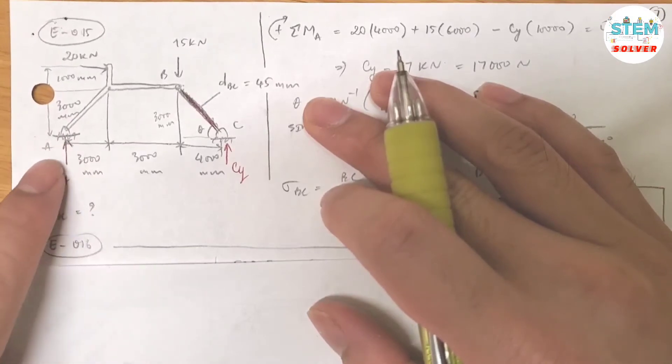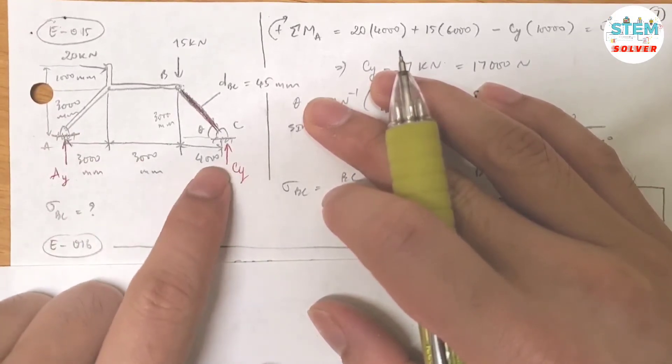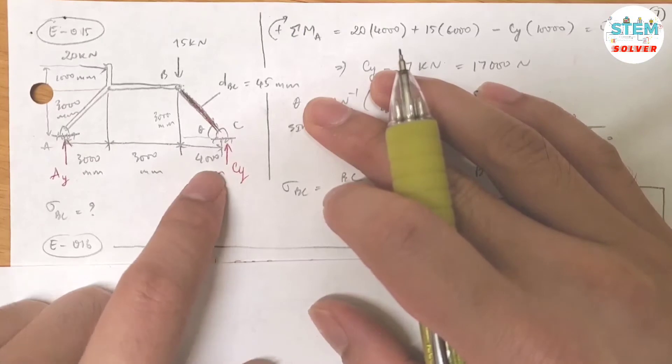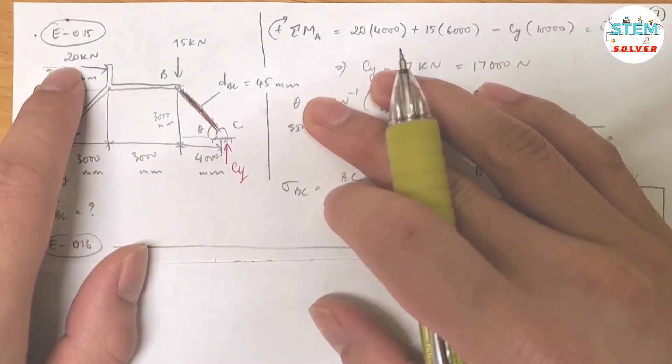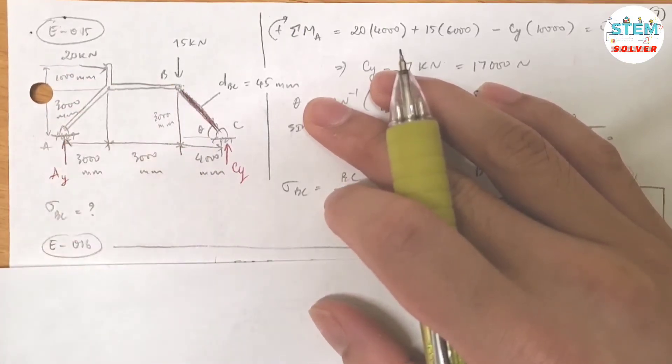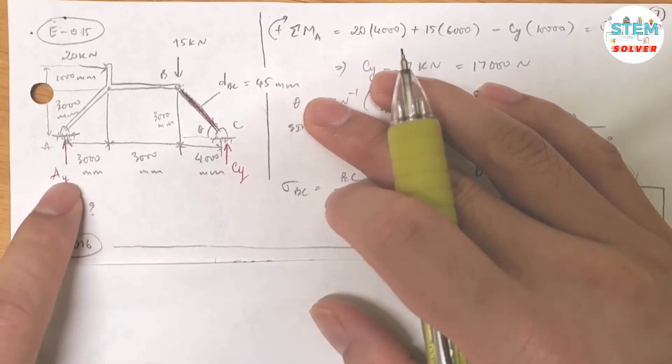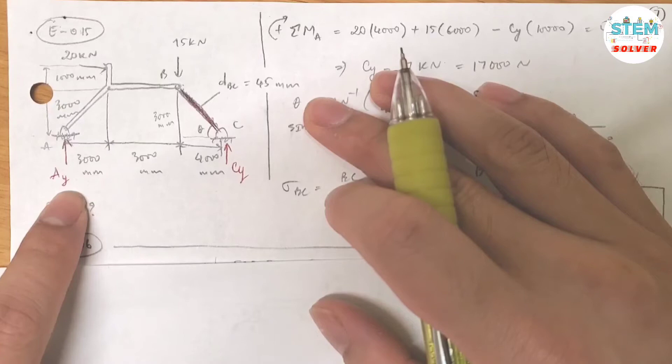First taking a look at this one, you see that this is at a pin, so you have a reaction force. And over here another pin, so you have another reaction force. And these are the external forces.